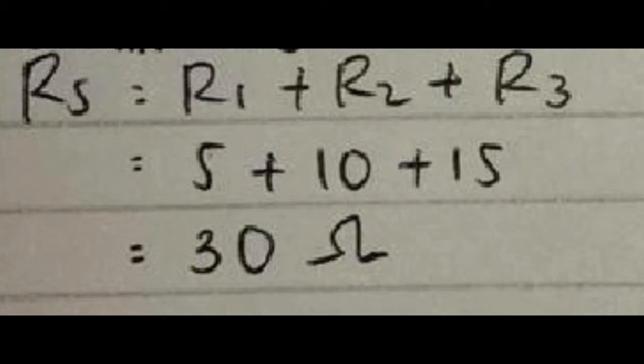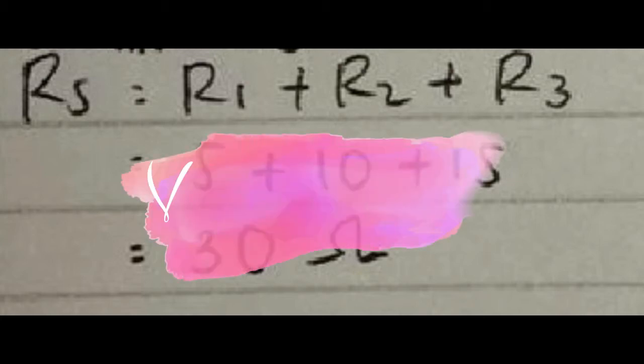Soal 19, tentukan hambatan pengganti antara titik A dan B jika R1, R2, R3 berturut-turut besarnya adalah 5 ohm, 10 ohm, 15 ohm.